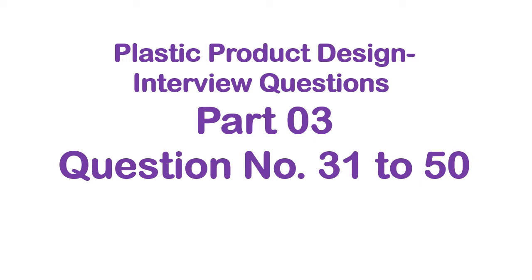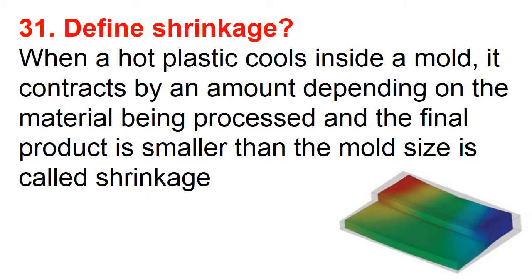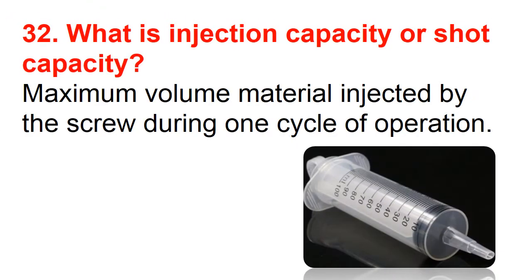Question number thirty-one: Define shrinkage. When hot plastic cools inside a mold, it contracts by an amount depending on the material being processed, and the final product is smaller than the mold size. This is called shrinkage.